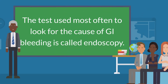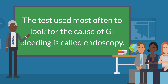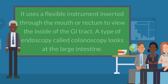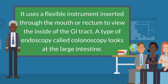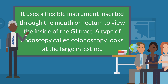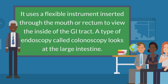The test used most often to look for the cause of G.I. bleeding is called endoscopy. It uses a flexible instrument inserted through the mouth or rectum to view the inside of the G.I. tract. A type of endoscopy called colonoscopy looks at the large intestine.